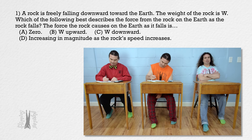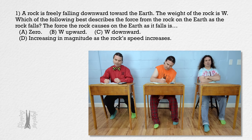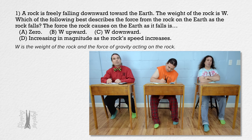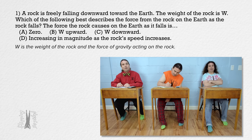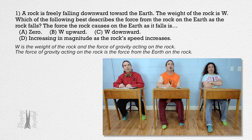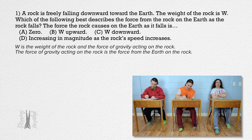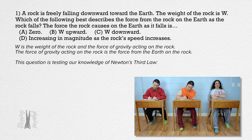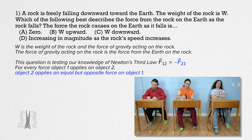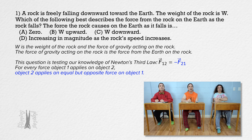Weight and force of gravity mean the same thing, so capital W is both the weight of the rock and the force of gravity on the rock. The force of gravity on the rock is the force from the earth on the rock. This question is testing our knowledge of Newton's Third Law: for every force object one applies on object two, object two applies an equal but opposite force on object one.